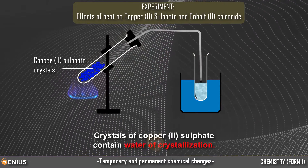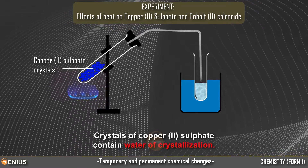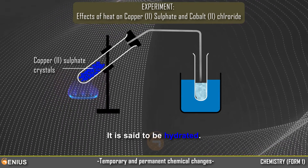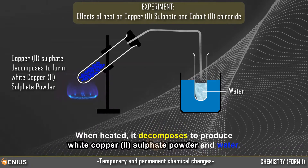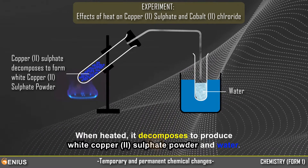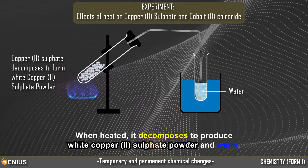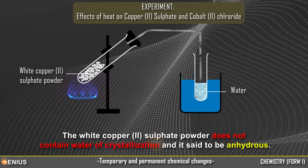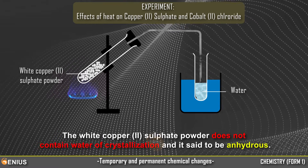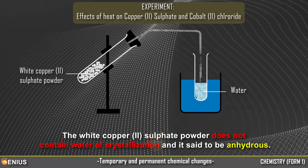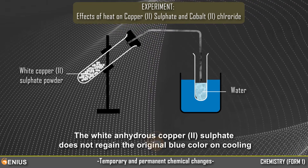Crystals of copper-2-sulfate contain water of crystallization. When heated, it decomposes to produce white copper-2-sulfate powder and water. The white copper-2-sulfate powder does not contain water of crystallization and it is said to be anhydrous. The white anhydrous copper-2-sulfate does not regain the original blue color on cooling.